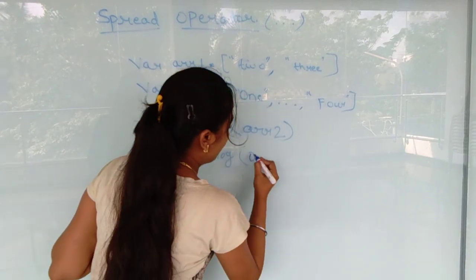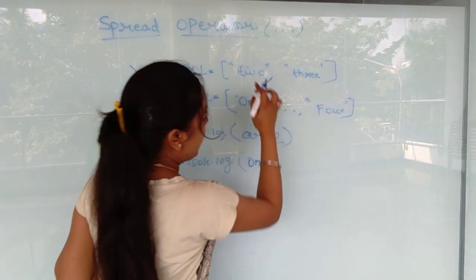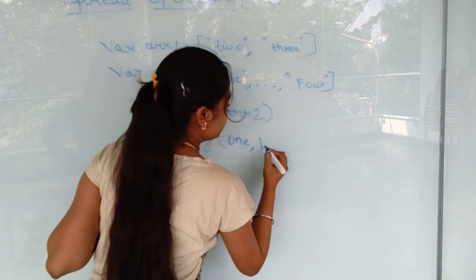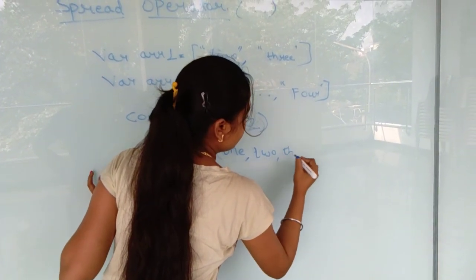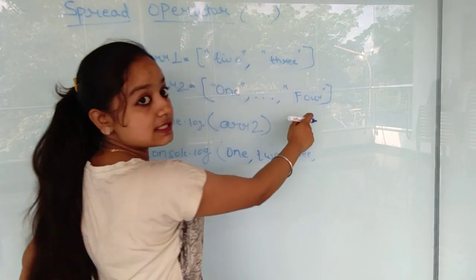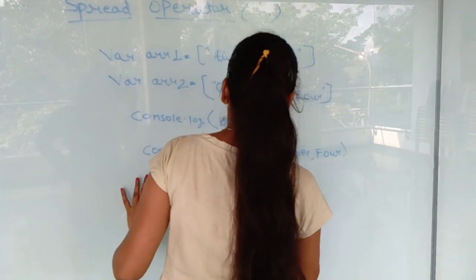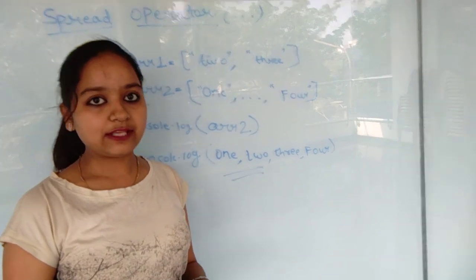And this is because of the spread operator. It spreads the values out. So this is the same as this.